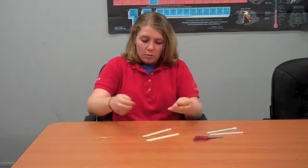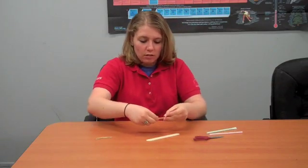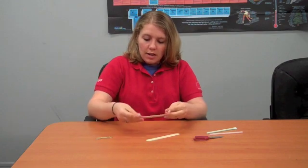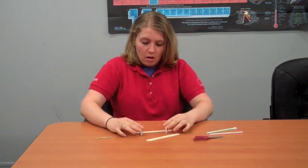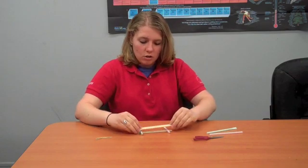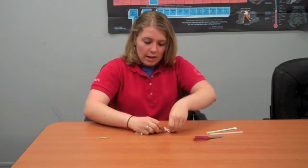Then you are going to sandwich those between your popsicle sticks. One on one end, one on the other, with about an inch on the other side.